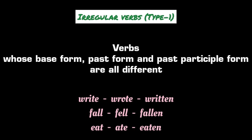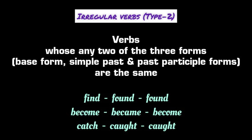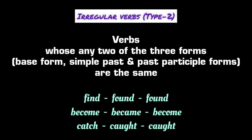We also come across irregular verbs whose any two of their three forms are the same. For example, 'find' inflects as 'found' both in simple past tense and in past participle form. The base form and past participle form of 'become' are the same, but in simple past tense it inflects as 'became.' The verb 'catch' is inflected as 'caught' both in simple past tense and in past participle form.